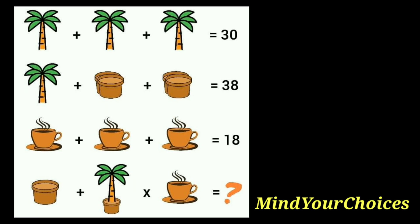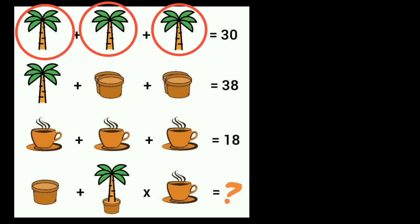You can see the first equation. Here is one tree, another tree, and another tree. Three plus three plus three equals 30. So the value of one tree is equal to 10. If you add 10 plus 10 plus 10, it equals 30. Don't forget the value of the tree is 10.